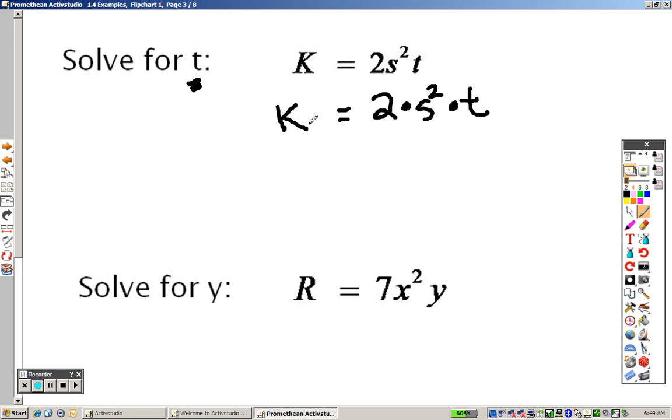Since that's all multiplication, to get T all by itself, what's the opposite of multiplication? Division, right? They're the opposites. So what that means is I want to get rid of everything but T. Since it's all multiplication, to get rid of the 2, divide by 2. To get rid of the S squared, I would divide by S squared onto both sides.